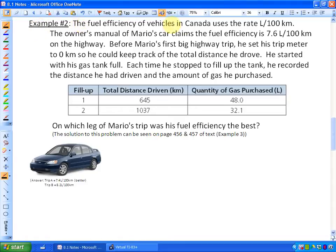It says the fuel efficiency of vehicles in Canada uses the rate of liters per 100 kilometers. The owner's manual of Mario's car claims a fuel efficiency is 7.6 liters per 100 kilometers on the highway. Before Mario's first big highway trip he set his trip meter to zero so he could keep track of his total distance he drove.